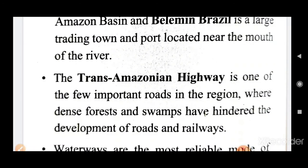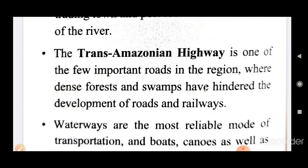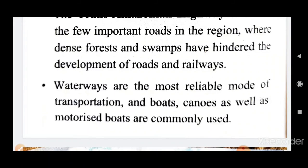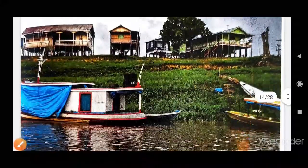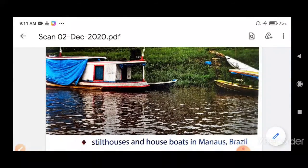The Trans-Amazon Highway is one of the few important roads in the region, where dense forest and swamps have hindered the development of roads and railways. Waterways are the most reliable mode of transportation, and boats, canoes, as well as motorized boats are commonly used.